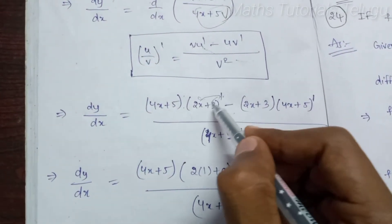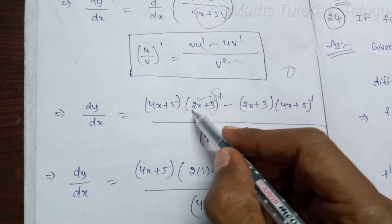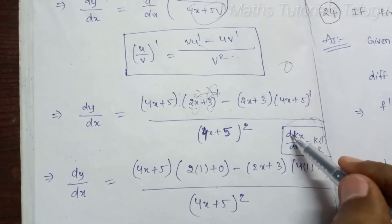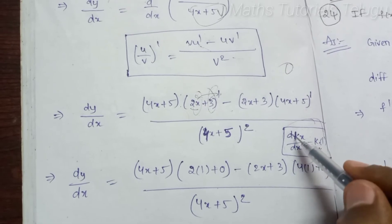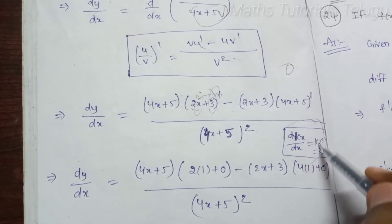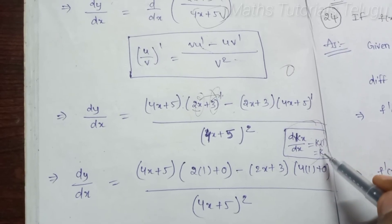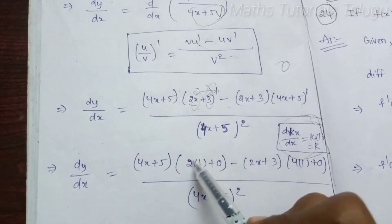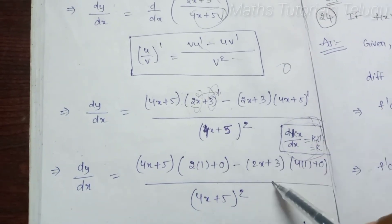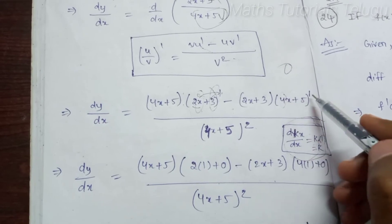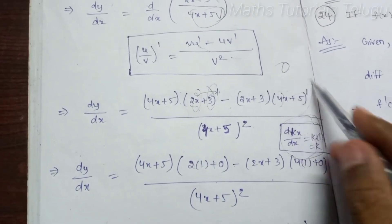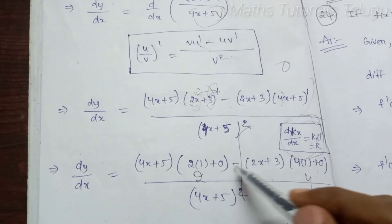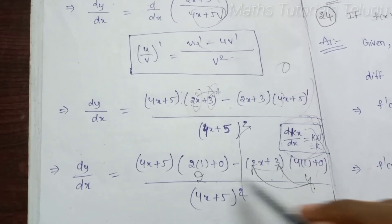Applying the derivatives: d by dx of kx is k, so the constant's differentiation is 0. U' = differentiation of (2x + 3) = 2 into 1 plus 0 = 2. V' = differentiation of (4x + 5) = 4 into 1 plus 0 = 4. So the numerator becomes (4x plus 5) into 2 minus (2x plus 3) into 4.